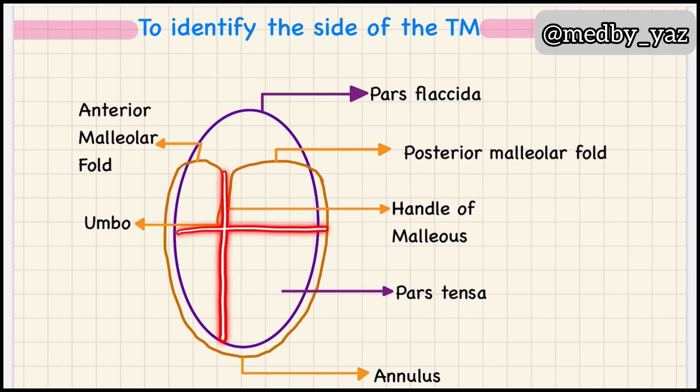Before knowing the names of the quadrants, we have to know what these two folds are. This is the anterior malleolar fold and this is the posterior malleolar fold. The quadrants below the anterior malleolar fold are the anterosuperior and anteroinferior.